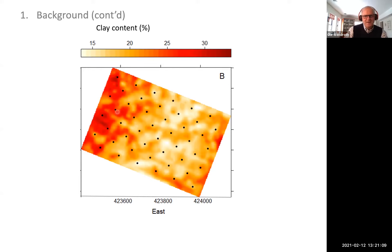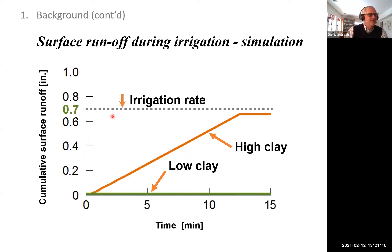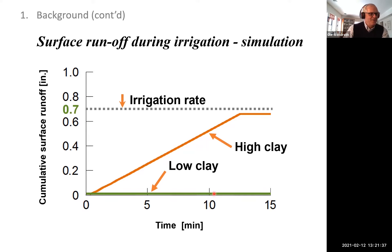In the silty area, water can infiltrate better than in the clay zones, which are especially on back slopes. So we have to deal with a lot of water runoff. I've done some computer simulations. Let's assume a situation where we apply seven-tenths of an inch. The time axis shows a few minutes after the beginning of irrigation — the typical time it takes the pivot to pass over one point. In the low clay content soil, all the water can infiltrate. However, in the sloped back slope area with high clay content soils, soon after the onset of irrigation, water is running off because the infiltration capacity has already been exhausted, and we have cumulative water runoff.